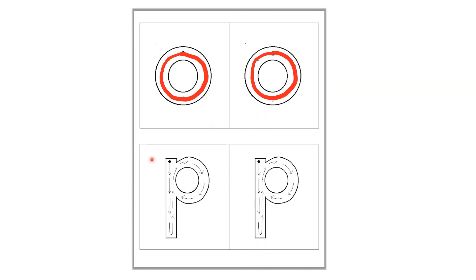Now we are going to trace on P. We are going to start with this dot and follow this arrow. Watch first. Can you trace on P now?